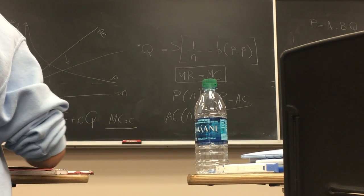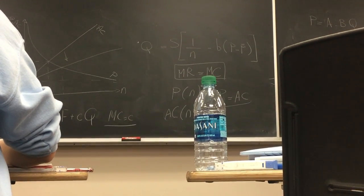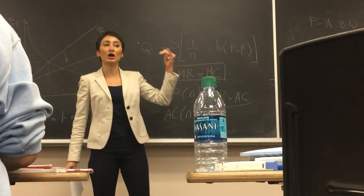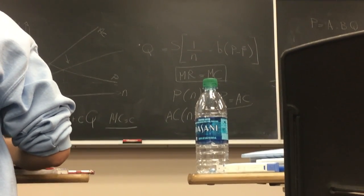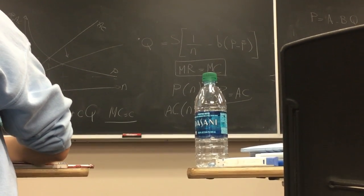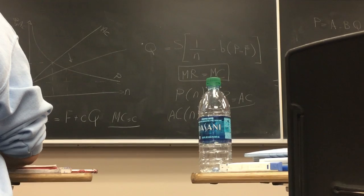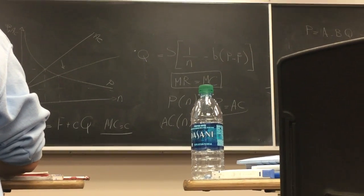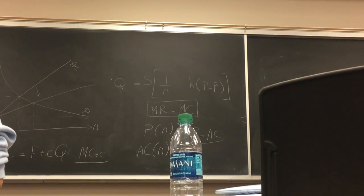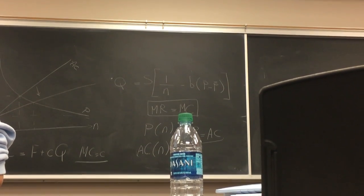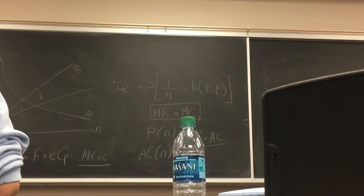So we talked about internal economies of scale. These are the models: two models of economies of scale, plus Ricardian, specific factor, Heckscher-Ohlin, and the standard trade model. Then we started talking about trade policy — tariff and import quota, export subsidy, export tax, and production subsidy. Production subsidy is an industrial policy, not strictly a trade policy.